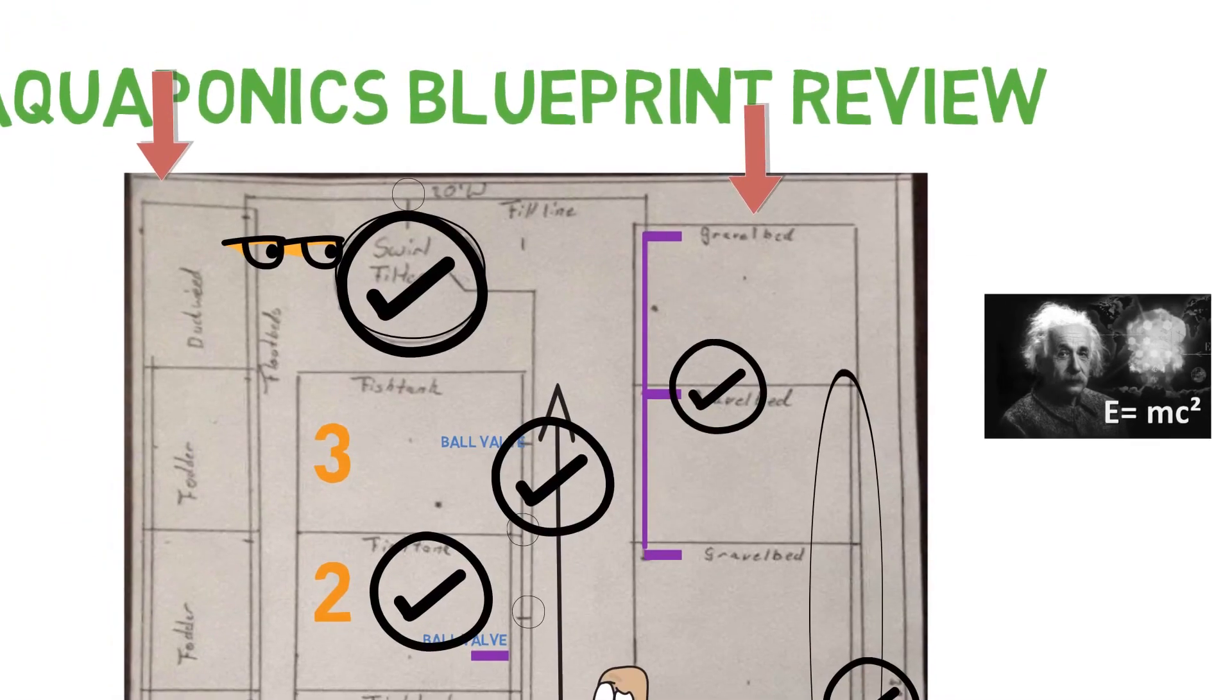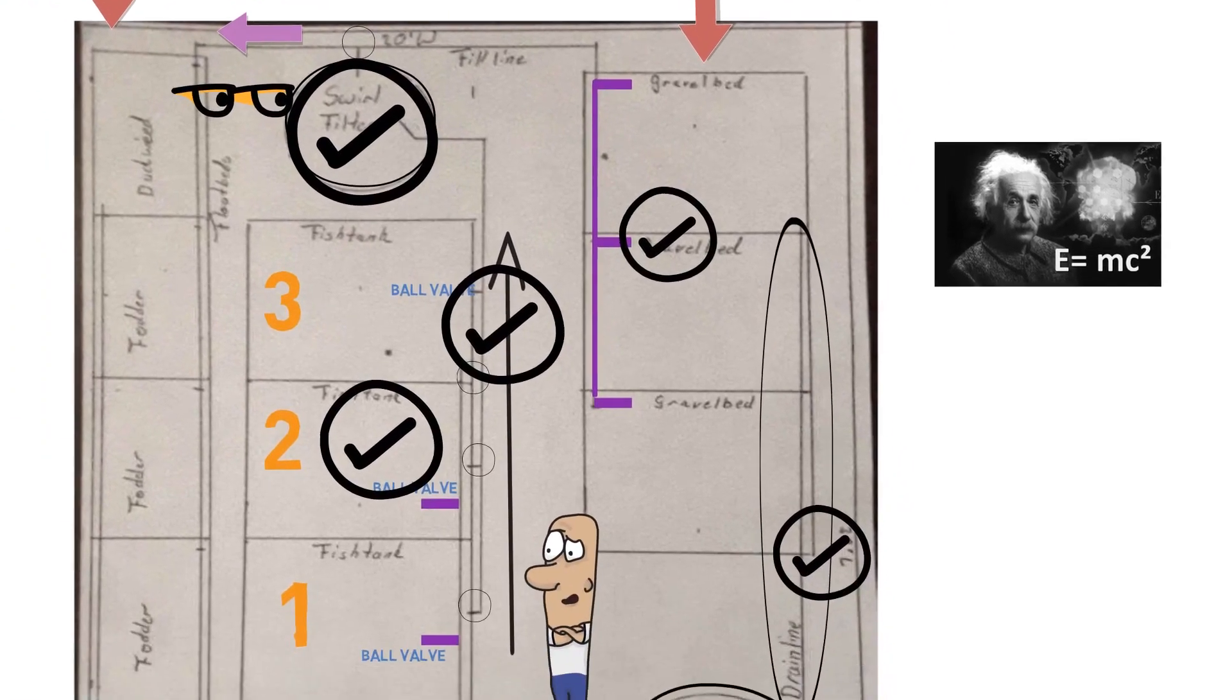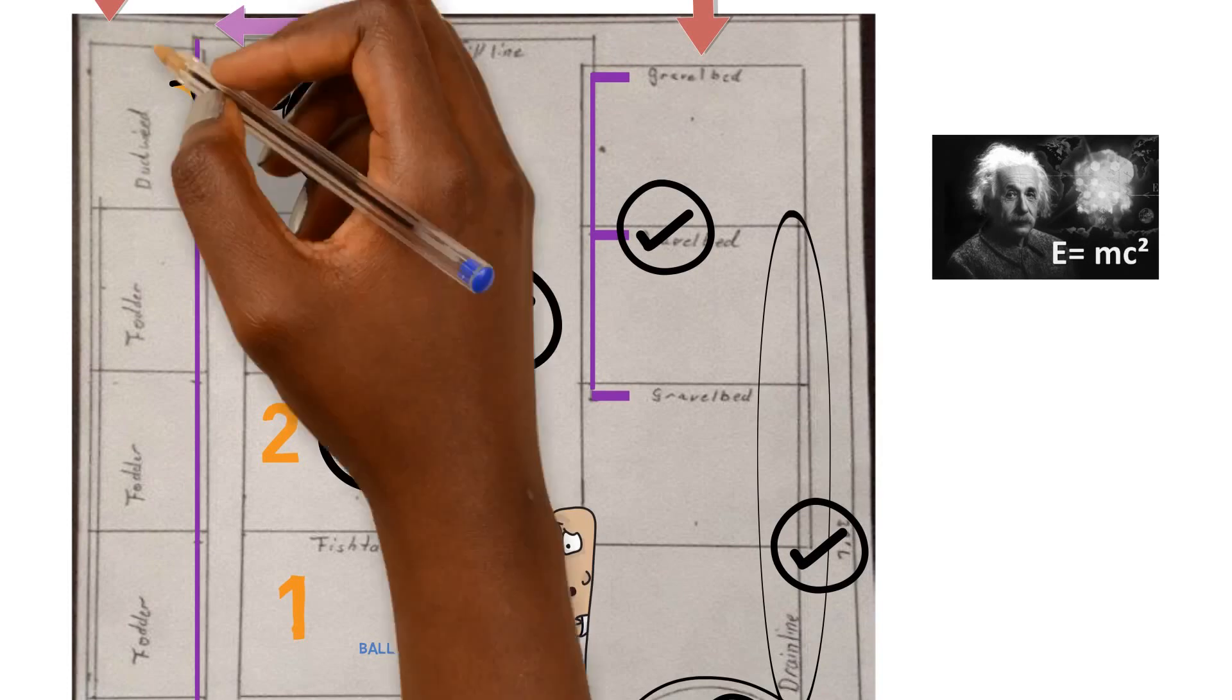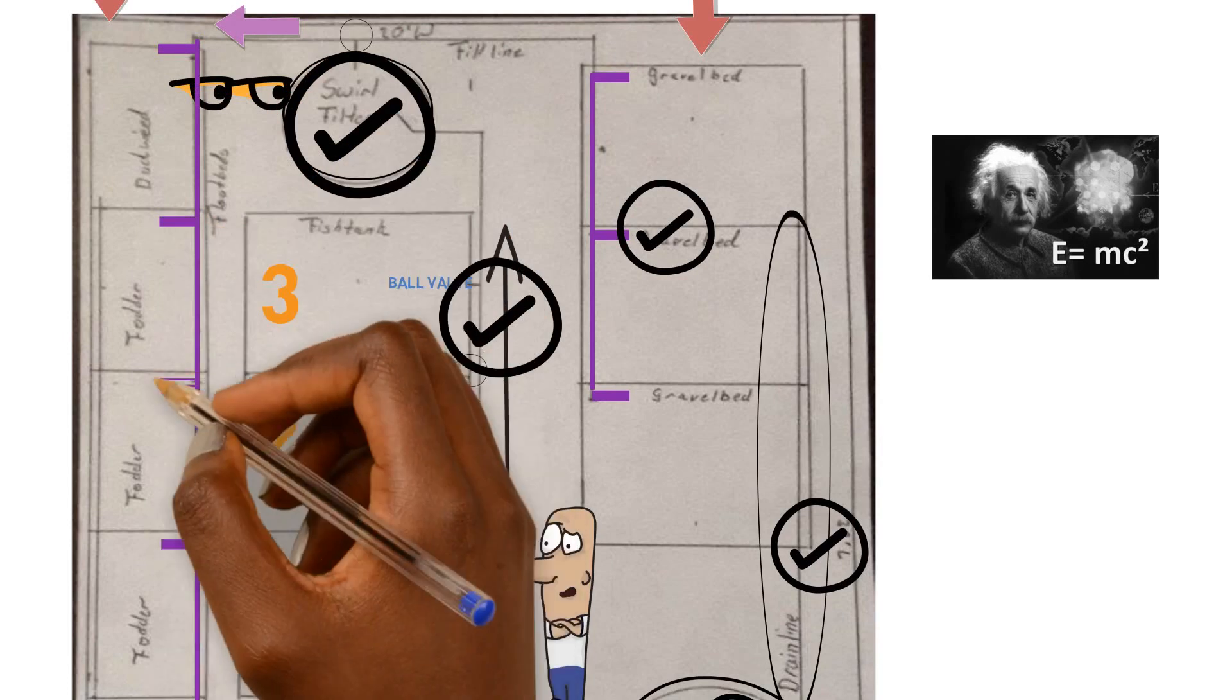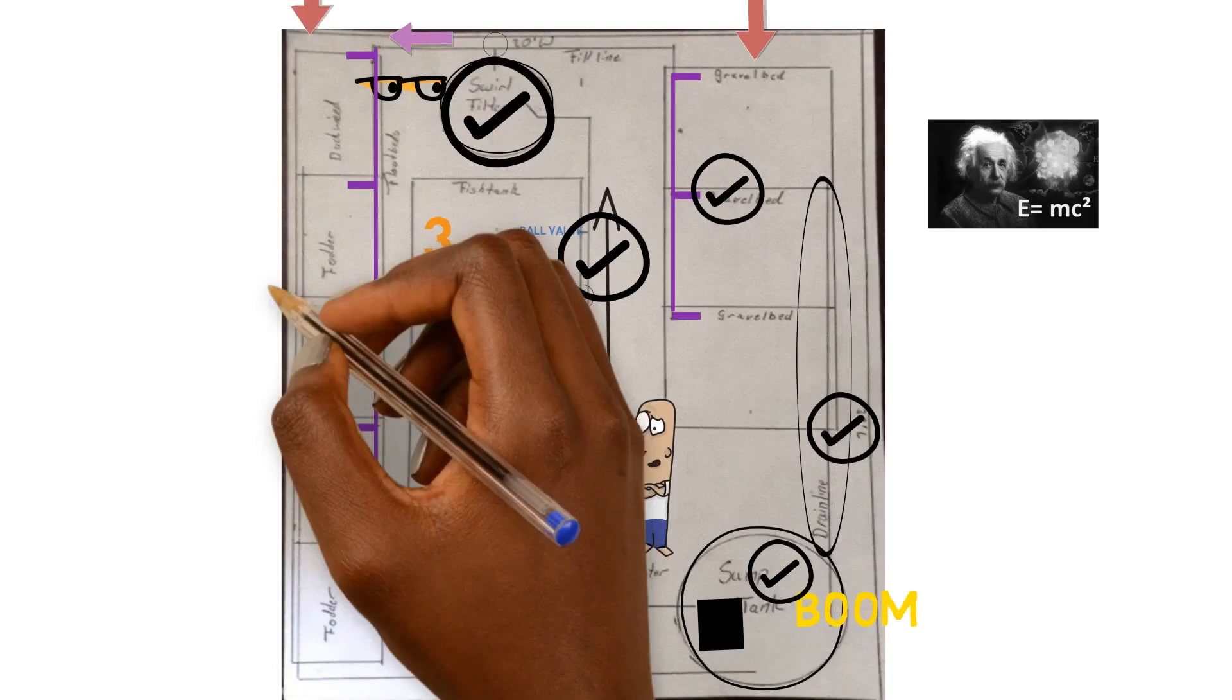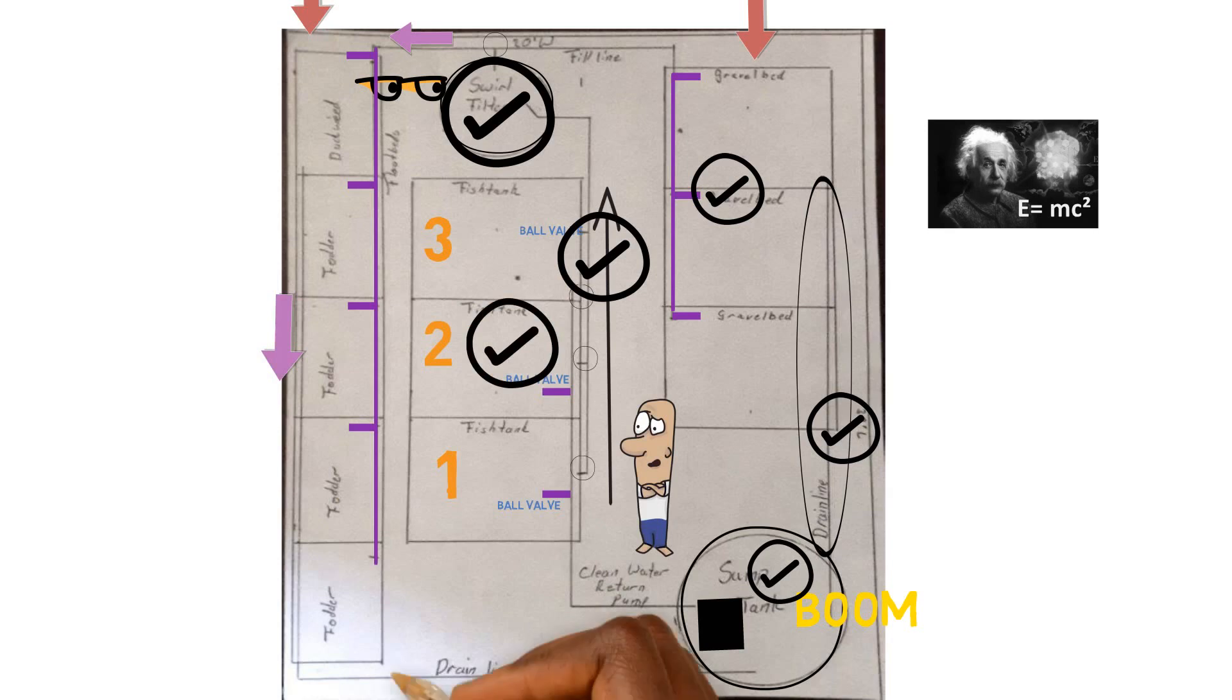So on the other half of the swirl filter coming out to the left side, we have it going to the duckweed and to these fodder tanks. Now you just need to make sure that there's ball valves on these as well. You have to control the flow coming into each one of these. And then those are going to connect out. They're all going to have their own outlet and they're going to connect back to have a drain line that's connecting back to the sump tank.